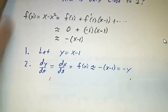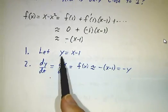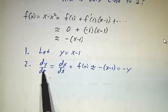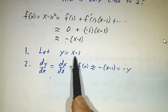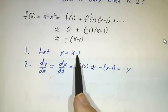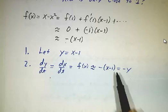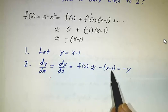And so our procedure is we let a new variable, I'm going to call it y, be x - 1. And the derivative of y is just the same as the derivative of x because the only difference is a constant. The derivative of f is f(x), which is approximately -(x - 1), which is -y.